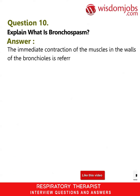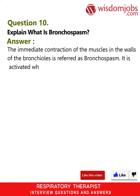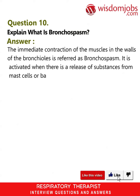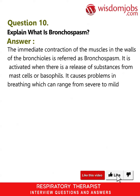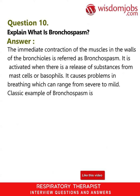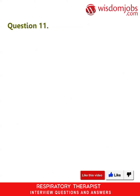Question 10: Explain what is bronchospasm. Answer: The immediate contraction of the muscles in the walls of the bronchioles is referred to as bronchospasm. It is activated when there is a release of substances from mast cells or basophils, and it causes problems in breathing which can range from severe to mild. A classic example of bronchospasm is asthma.